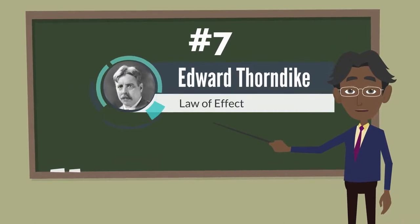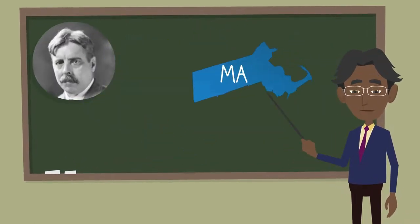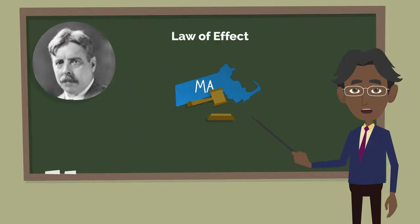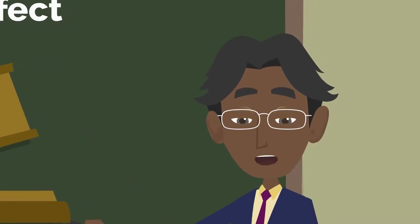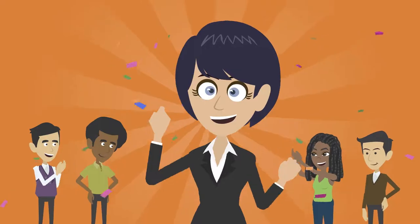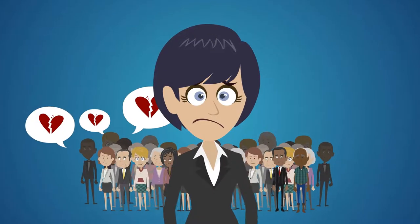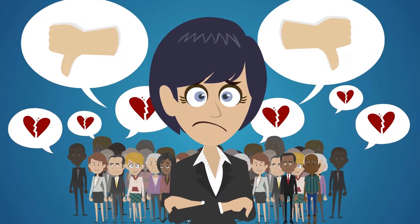Number seven: Edward Thorndike. Edward Thorndike was born in Williamsburg, Massachusetts in 1874. He was the author of the learning theory known as the Law of Effect. Similar to Skinner's theory, Thorndike's theory argues that behaviors that lead to satisfying outcomes are likely to be repeated, whereas behaviors that lead to undesired outcomes are less likely to occur.